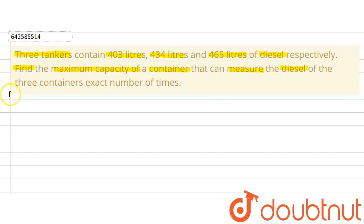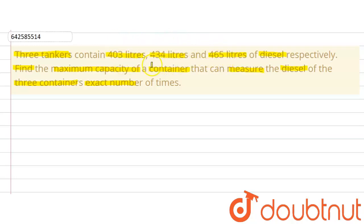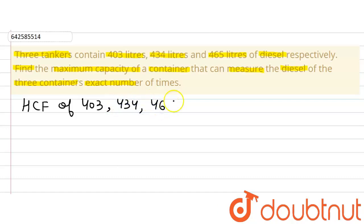We are asked to find out the maximum capacity of the container that can measure the diesel present in these containers. Whenever we need to find the greatest or maximum capacity of something, we solve such questions by finding out the HCF of the given numbers. The HCF of the amounts of diesel will tell us the maximum capacity of that container.